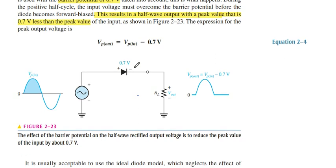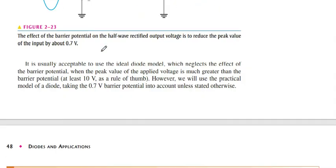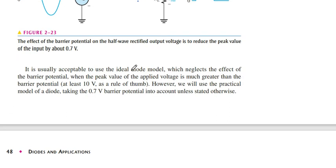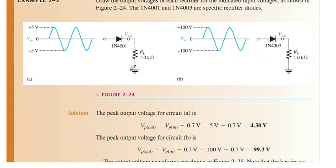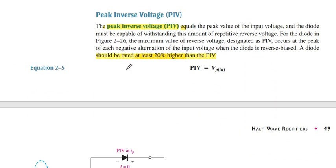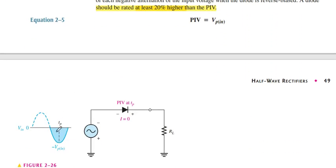We subtract 0.7 volt from the peak input voltage to get the peak output voltage. Then the topic also gives an example related to this. Next, peak inverse voltage: what is peak inverse voltage? When we give a voltage in the negative form, there is always an inverse voltage across the diode — this is called the peak inverse voltage.